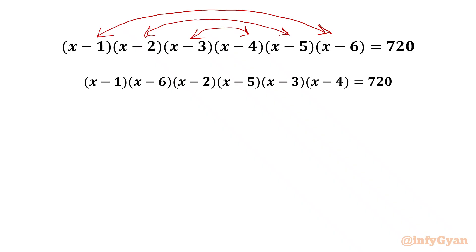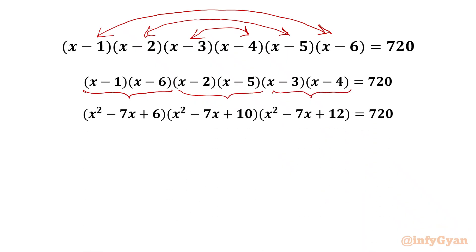Now we are going to multiply x minus 1 with x minus 6, x minus 2 with x minus 5, and x minus 3 with x minus 4. We will be getting (x² − 7x + 6)(x² − 7x + 10)(x² − 7x + 12) = 720.